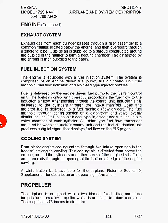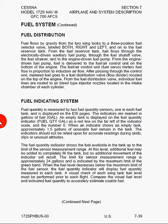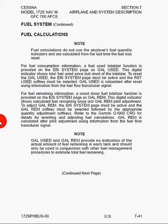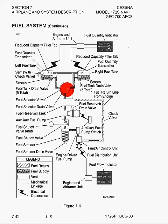We've got the fuel system, the fuel distribution and fuel indicating system, and fuel calculations. Here you can see a really great diagram which you should be able to draw from memory for your flight instructor. As you get more proficient towards the end of your training, you really should know this system inside and out. It's not terribly complicated — you've got two tanks on the wings, they come together through the fuel selector valve, go through strainers and pumps, and eventually get to the engine. You can really reconstruct this diagram if you just don't get overwhelmed.